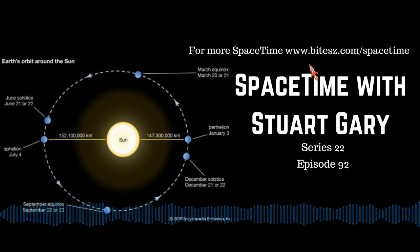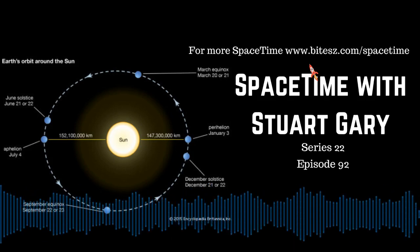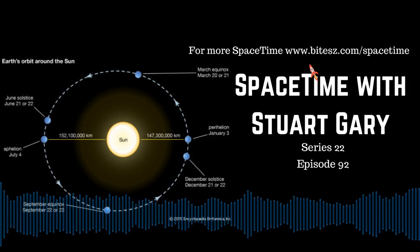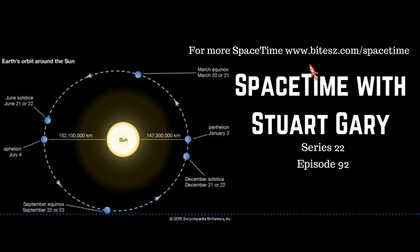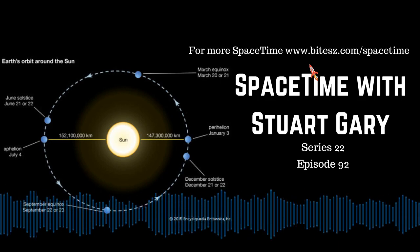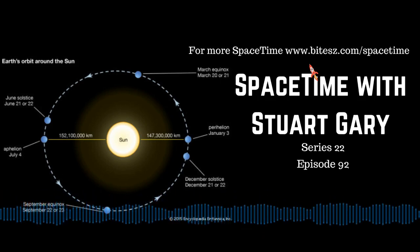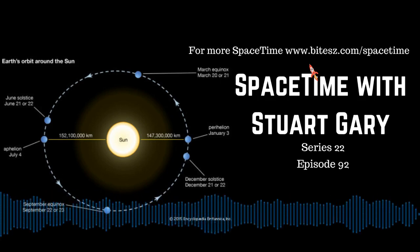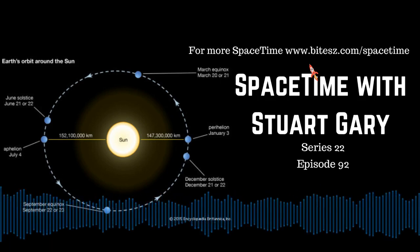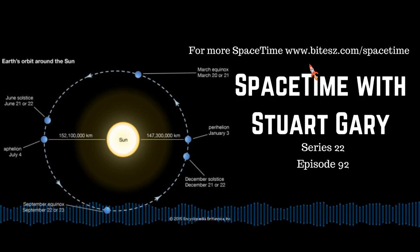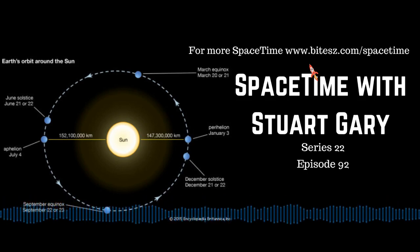This is Spacetime Series 22, Episode 92. Coming up: a new measurement for the mass of the most common particle in the universe, NASA finds the wreckage of India's crash lunar lander, and it's all systems go for the launch of CHEOPS. All that and more coming up on Spacetime. Welcome to Spacetime with Stuart Garry.